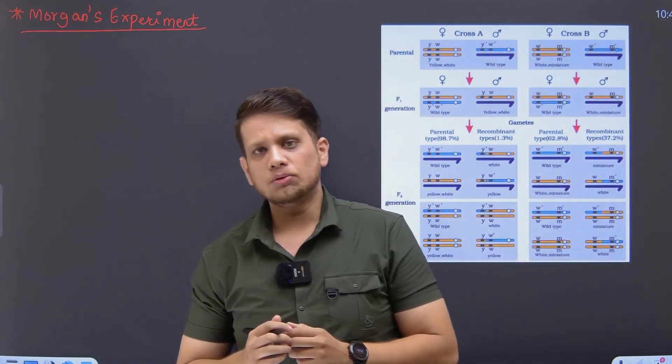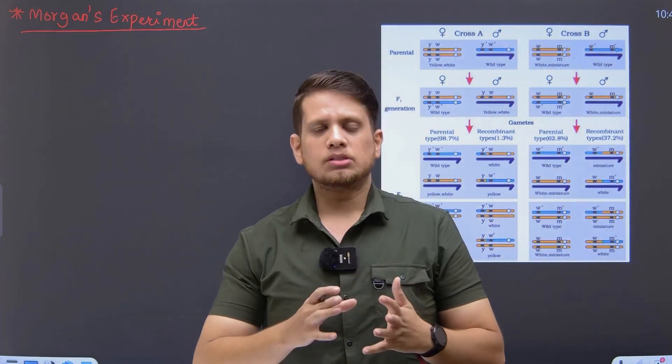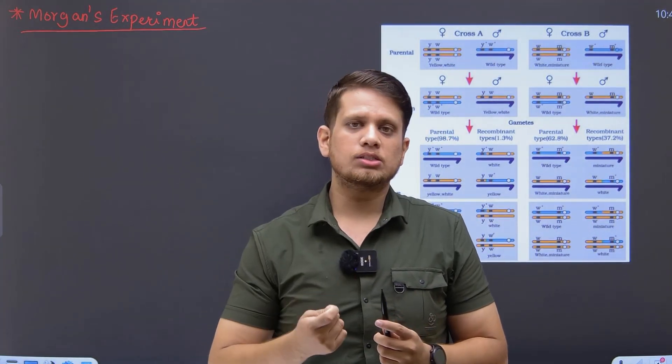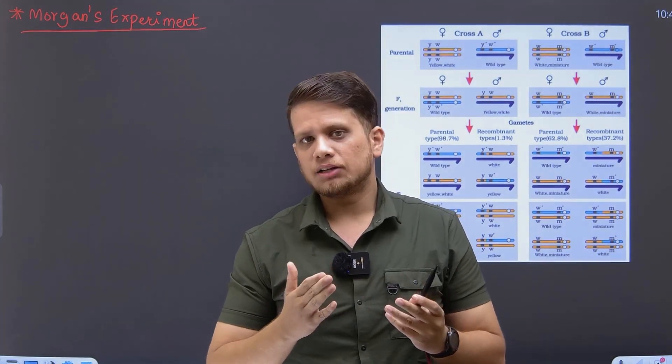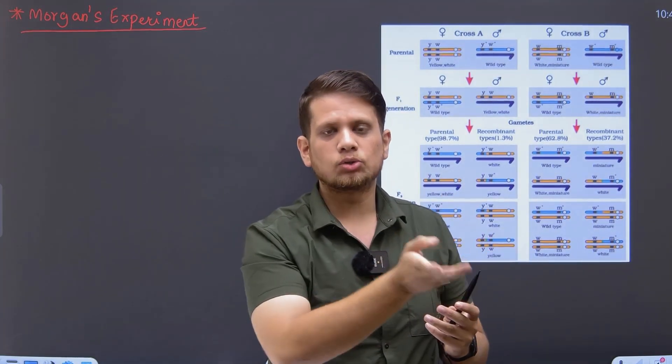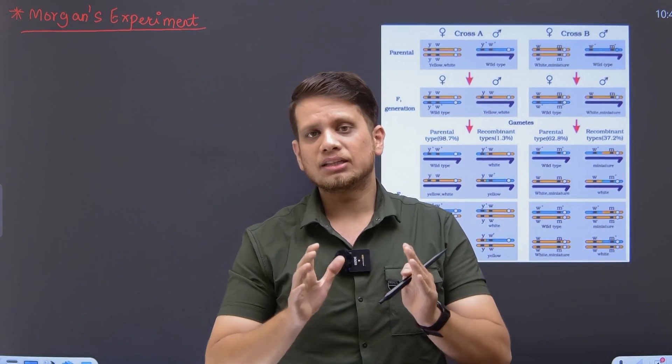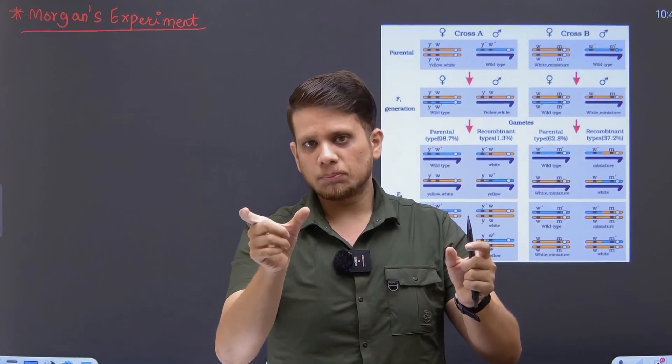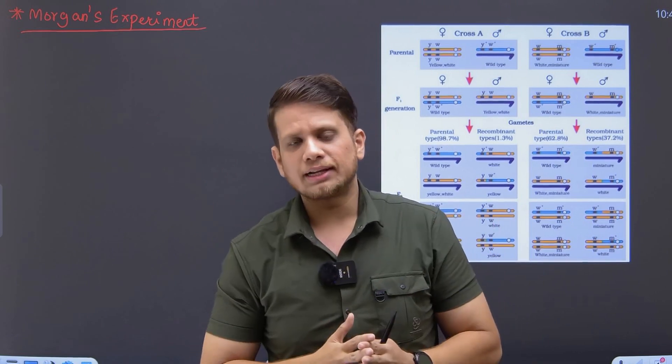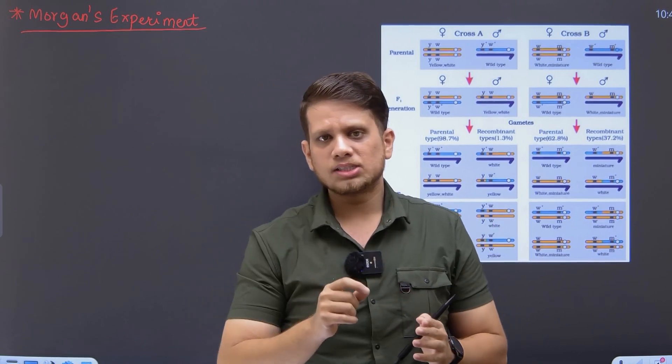So students, we have been doing the Morgan experiment. As I told you last time, Morgan was that person who was actually researching on the concept of linkage. Now, what was linkage? If you remember from the previous videos, you'll realize that linkage is nothing but the physical association between two genes. When two genes are associated with each other, we call that concept linkage.